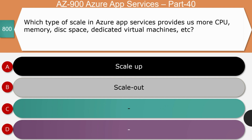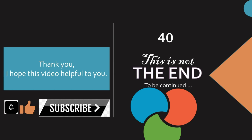The next question — which type of scale in Azure App Services provides more CPU, memory, disk space, and dedicated virtual machines: scale up or scale out? The right answer is scale up. Most of the time, CPU, memory, and disk space are increased in the virtual machine or server environment where the application is hosted, which is a perfect example of scale up.